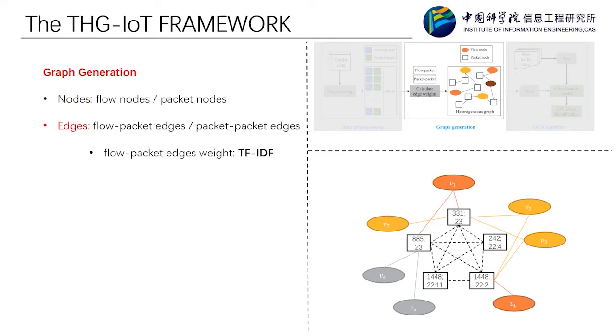There are two types of edges in THG: flow-packet edges and packet-packet edges. The flow-packet edge connects the flow node with the packet node belonging to itself. We assign flow-packet edges a weight to reflect the contribution of the packet to the flow to which it belongs. In this paper, the message type and packet length information, Mi Li, are regarded as a word. The flow is seen as a piece of text. The term TF-IDF is selected as the flow-packet edge weight calculation.